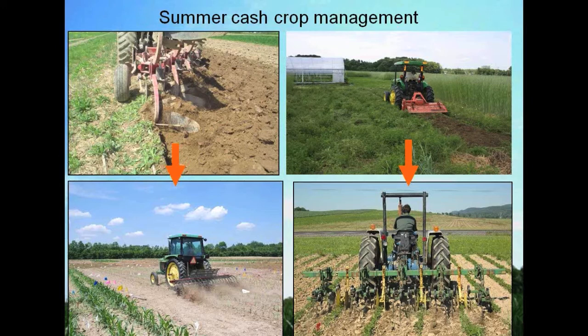Turning to managing the cash crop once it has been planted and your cover crop controlled in a variety of manners: if tillage was the choice of control, you may have to go in and do cultivation steps. We have here organic corn production in which a rotary hoe is being used to cultivate within the rows, or a tine weeder in the case of soybean production.